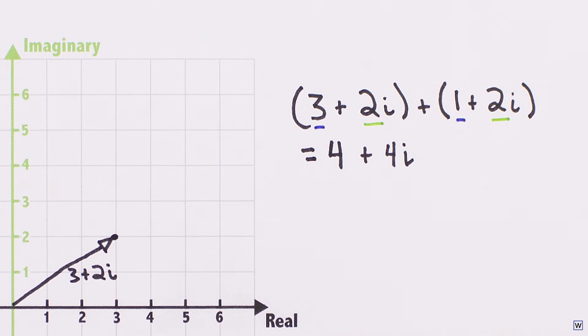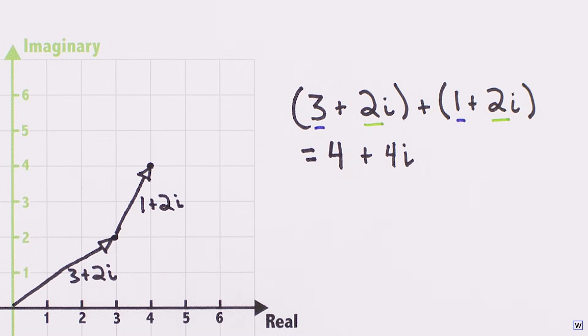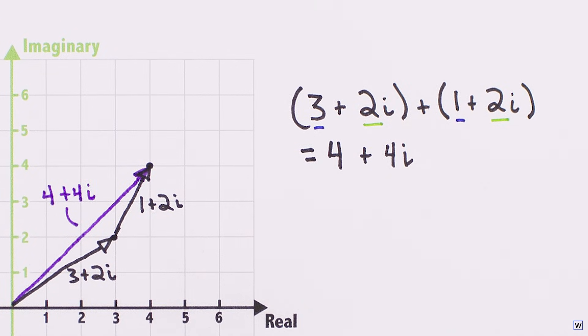If we travel in one direction for a certain distance, and then in another direction, we can add the components of each part of our trip together to find the total distance we have traveled in each direction.